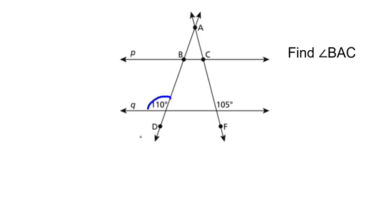I know that this angle is 110, and I know these are parallel lines. So that means that this angle and this angle are congruent because they're corresponding. I also know that this angle is 105, and this angle and this angle are corresponding.